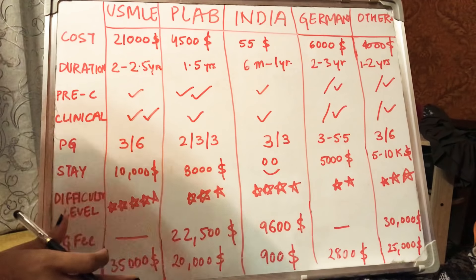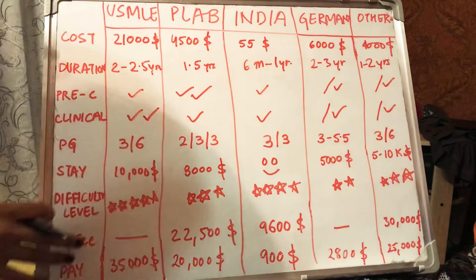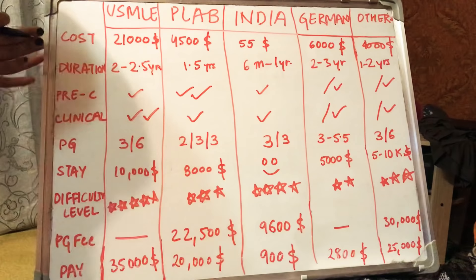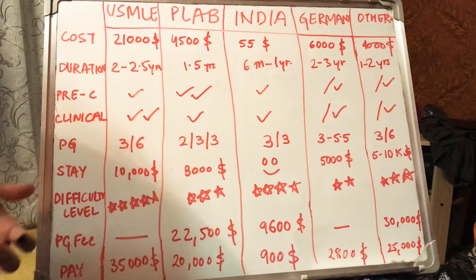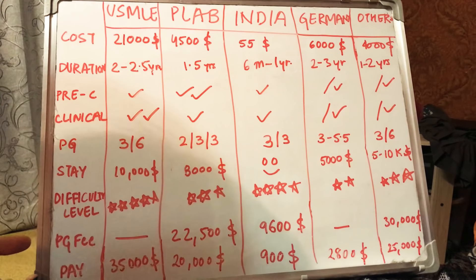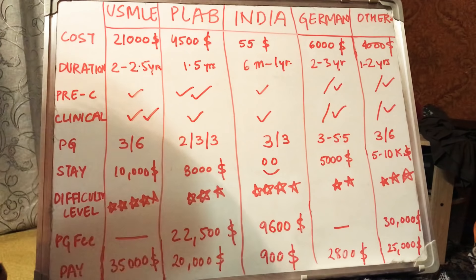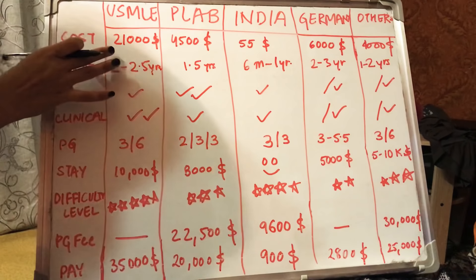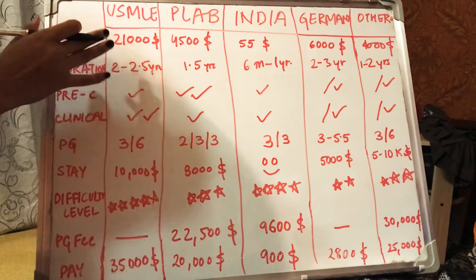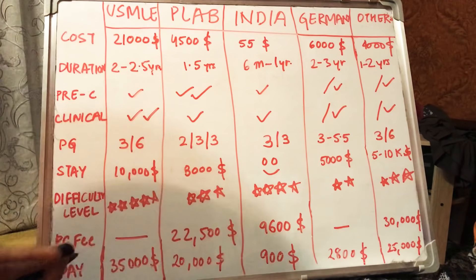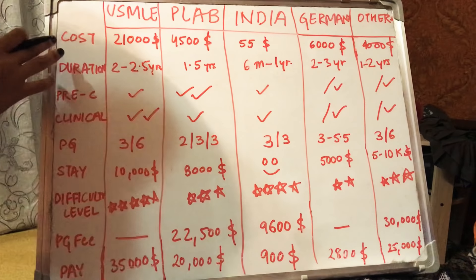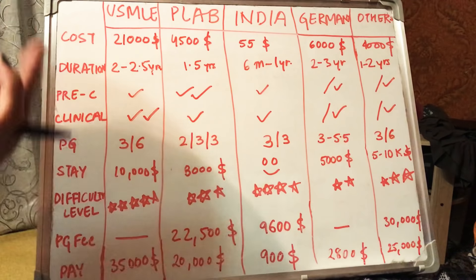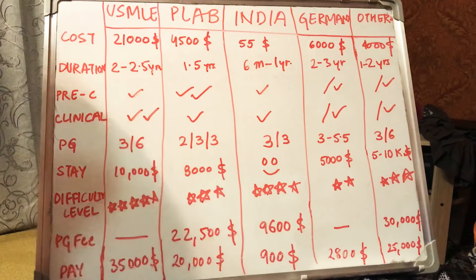Let's start with USMLE. The cost of the application fees is $21,000. This includes your travel expenses during Step 2 CS, Step 3, the exam you give after completing your residency application, and the cost of all three steps plus USCE — United States Clinical Experience. This cost includes the clinical experience amount as well, which is about half of the whole price. I have uploaded a video about USCE so you can check that out.